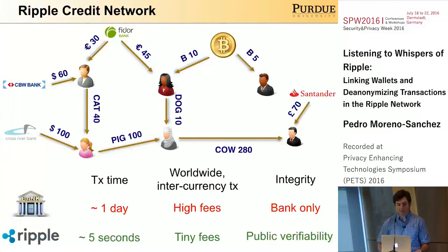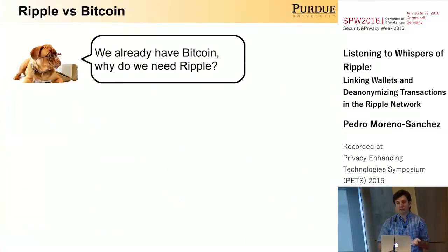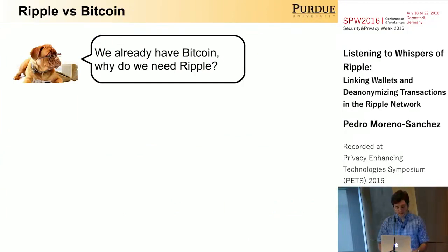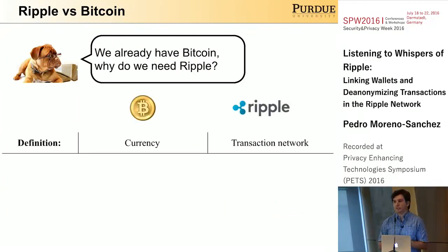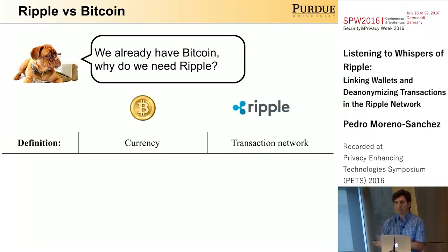At this moment you might wonder, if we have Bitcoin today already, why do we need Ripple at all? Well, let's compare them. Conceptually, they are different. Bitcoin is a currency and allows payments only in Bitcoin, while Ripple is a transaction network where it's possible to perform transactions in any currency.